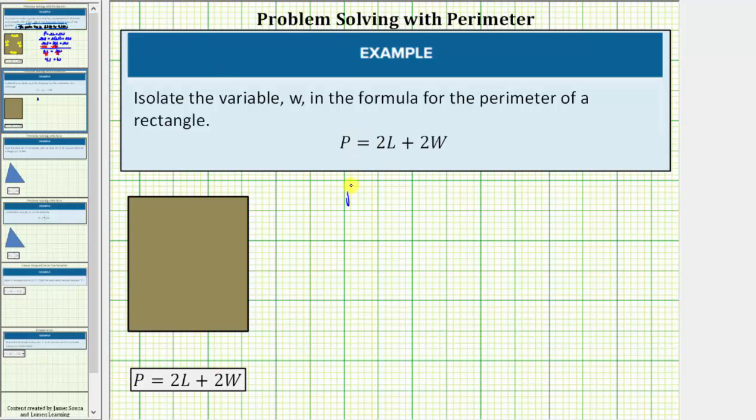So beginning with the equation p equals 2l plus 2w. For the first step we isolate the w term by adding or subtracting. So we don't want this positive 2l here. So we subtract 2l on both sides.